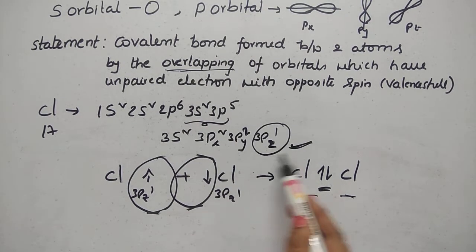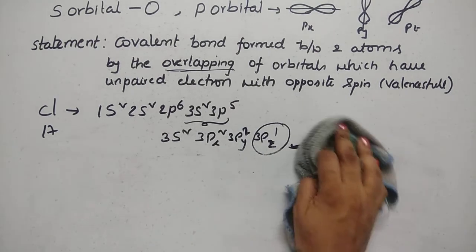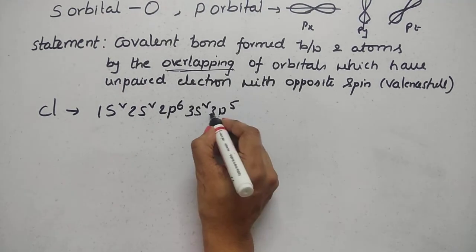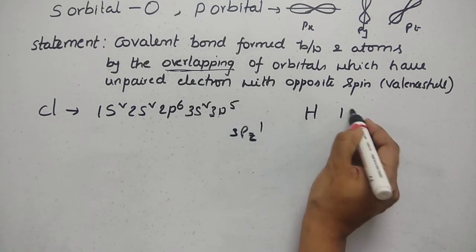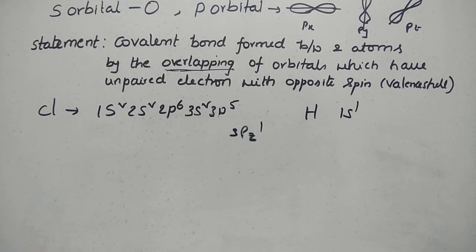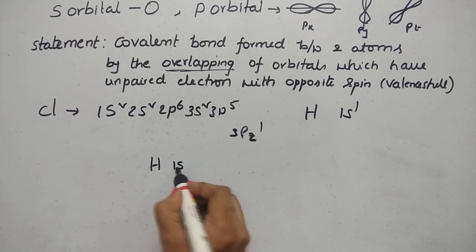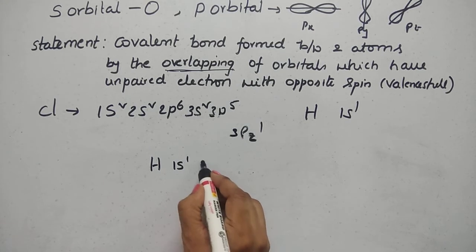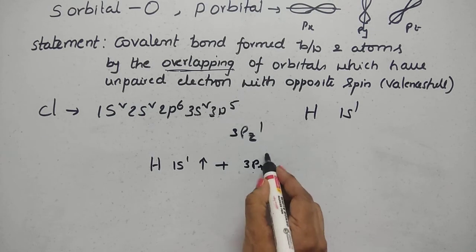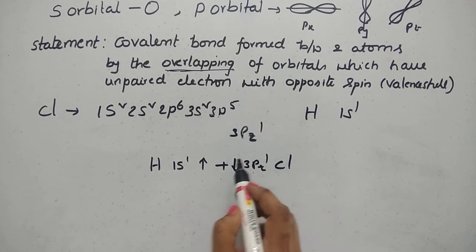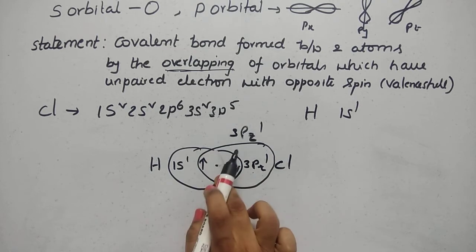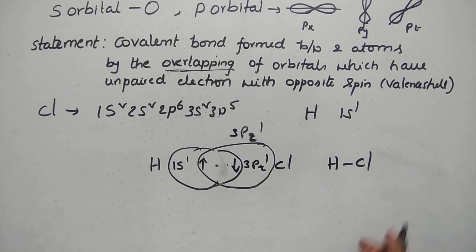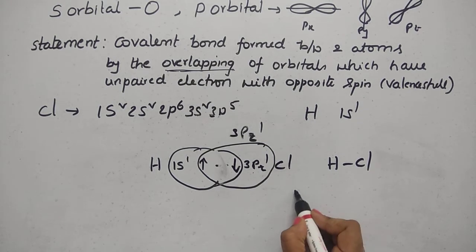This is the overlapping of an unpaired electron in the outermost shell. Next, HCl. In HCl, the unpaired electron of hydrogen (1s1) overlaps with the unpaired electron of chlorine (3p) with opposite spin. These two overlapping electrons form the H–Cl sigma bond.